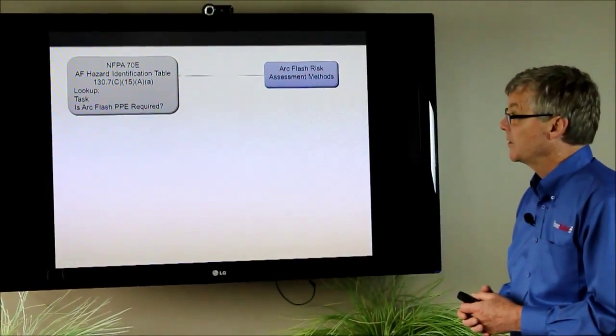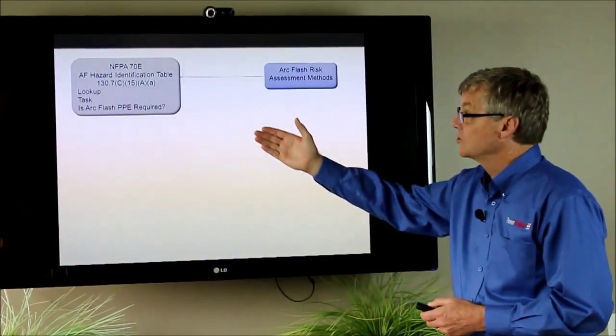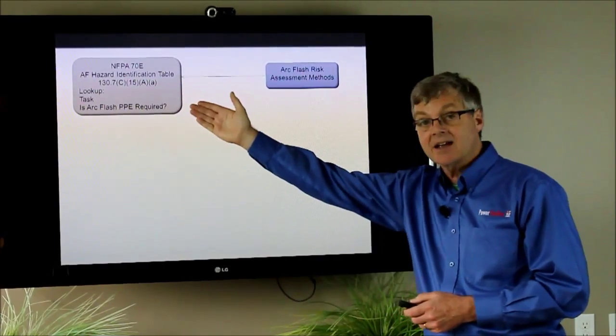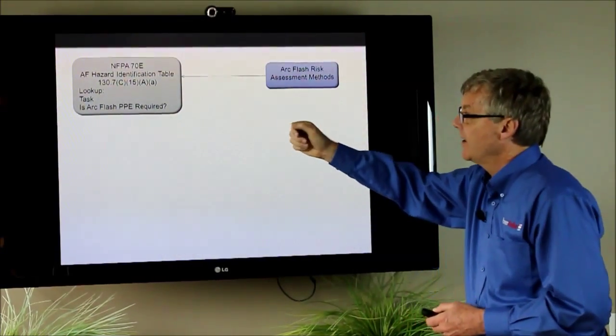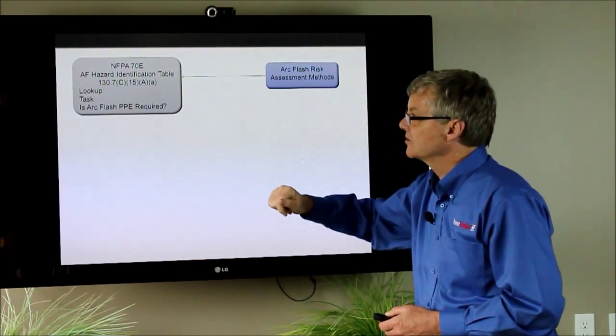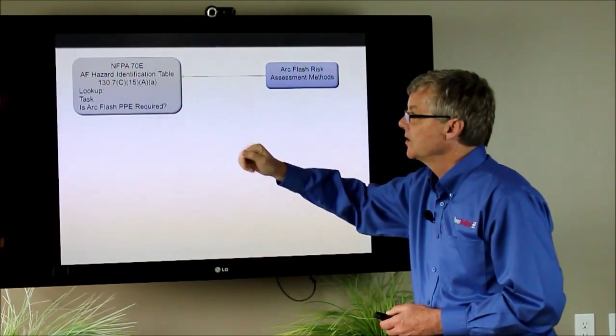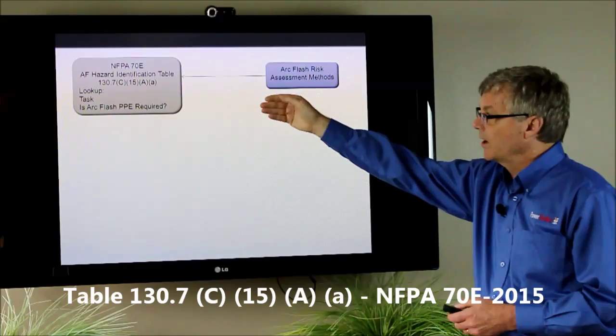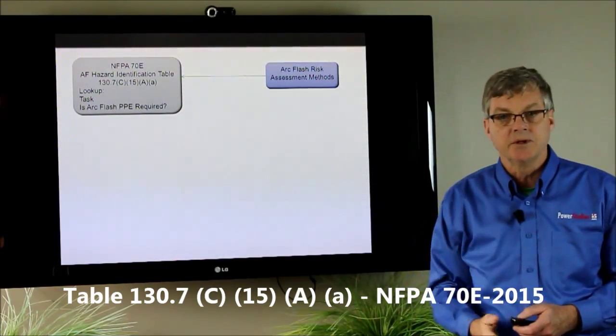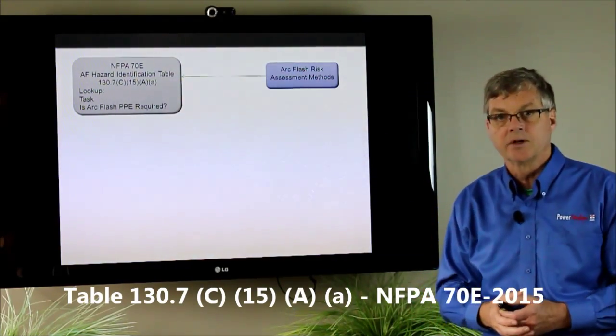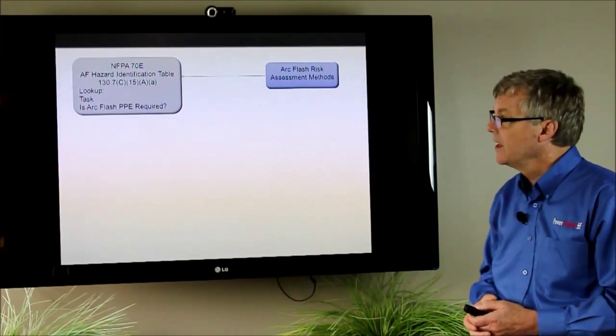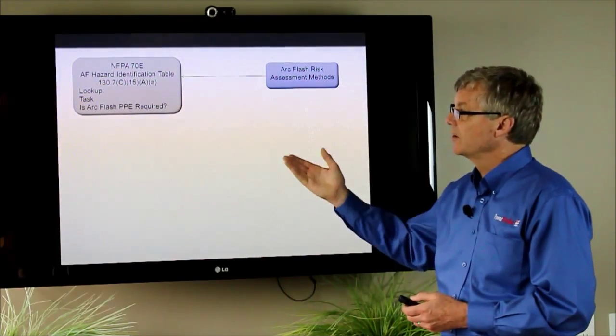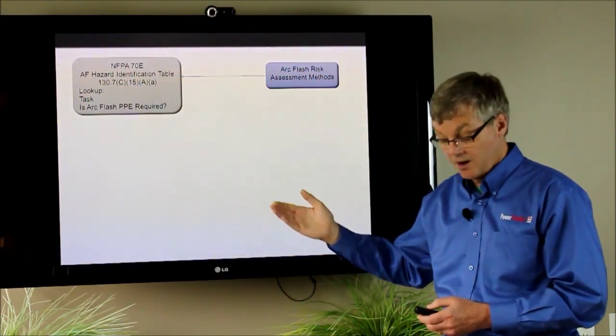One is to use the NFPA 70E task table method. They now have a new table in this 2015 version, 130.7C15AA, and that's where you look up the task that you're going to be doing, the type of job that you're going to be doing on a piece of electrical equipment, and then you look to see whether or not there's arc flash PPE required.